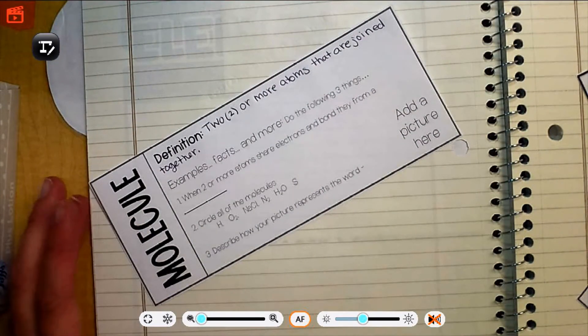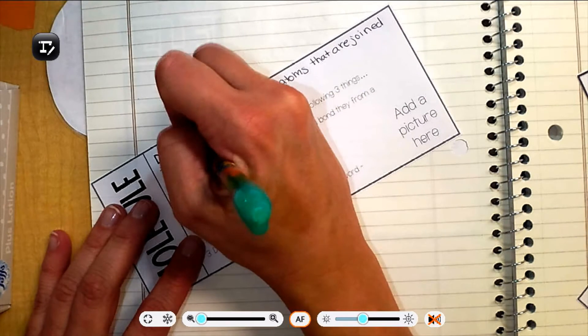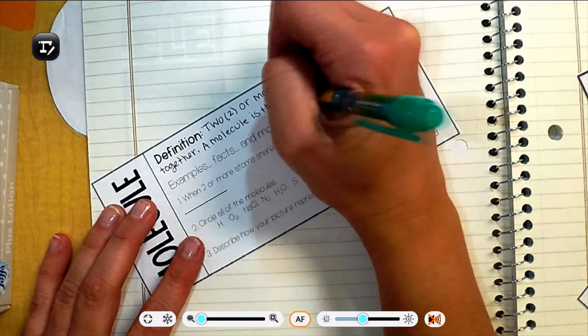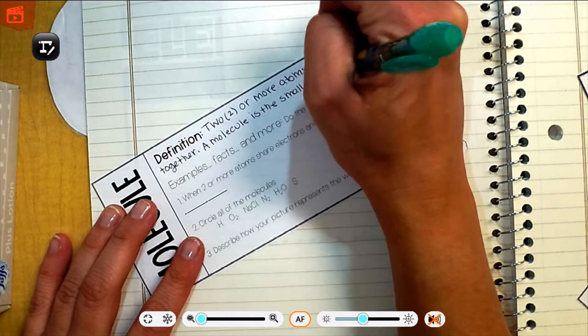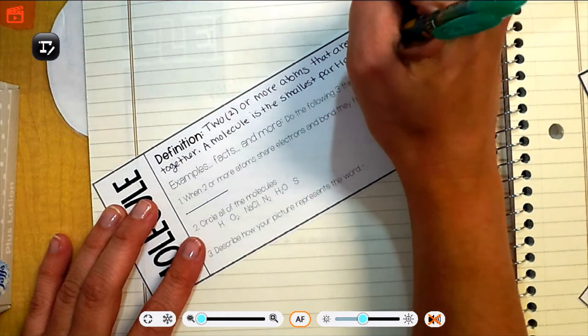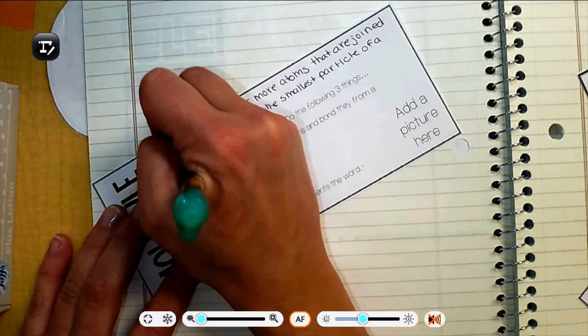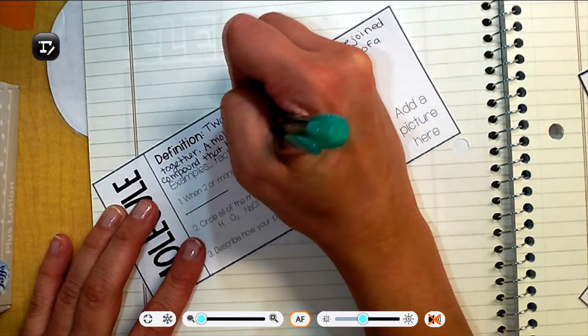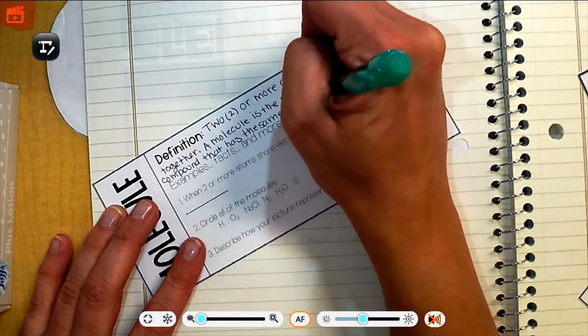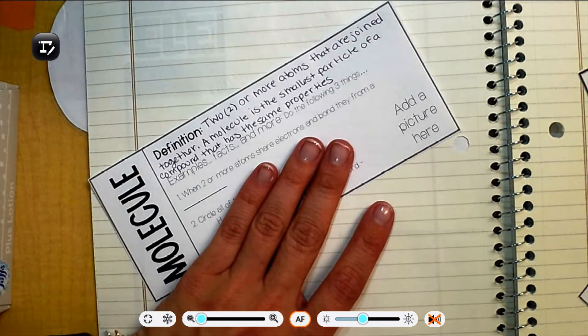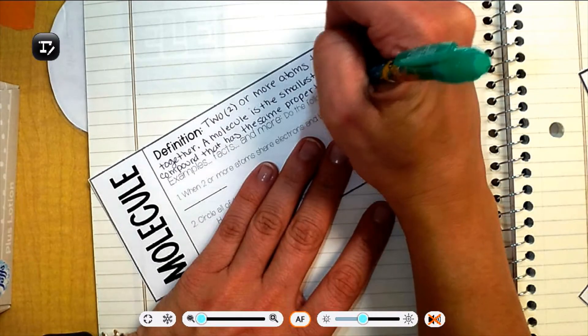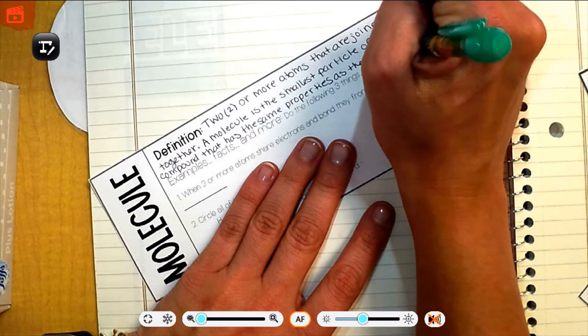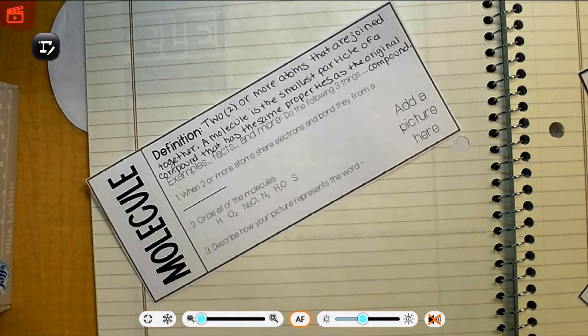You're like, Ms. Philpott, that wasn't that long. There's a second part. A molecule is the smallest particle of a compound that has the same properties. So that means it has the same, like, stuff, the same things that we can see, smell, taste, feel, touch. Those are the same thing, properties, as the original compound. See, I told you it was long. So if you need to pause the video here and get that down, now would be a good time to do that. Then we're going to move on to the two questions.